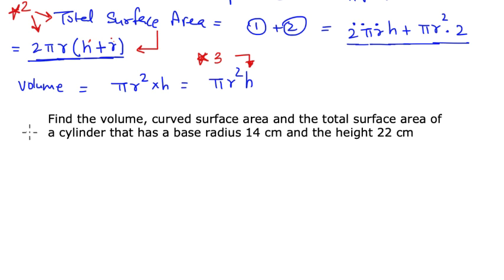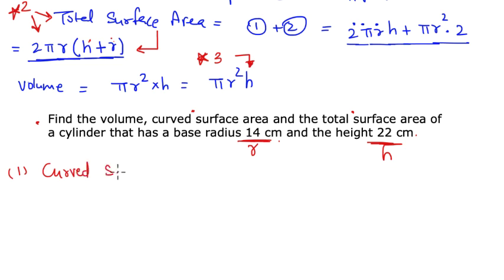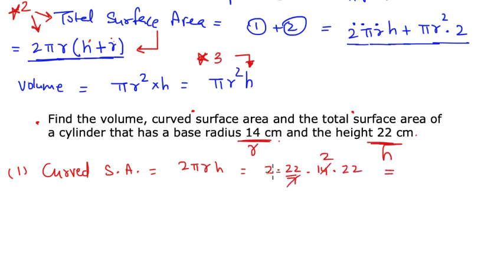The given problem: find the volume, curved surface area, and total surface area of a cylinder with base radius r = 14 cm and height h = 22 cm. First, the curved surface area equals 2πrh = 2 × (22/7) × 14 × 22. Since 7 goes into 14 to give 2, the result is 1936 cm².